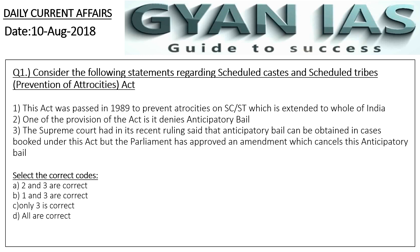Question 1: Consider the following statements regarding the Scheduled Castes and Scheduled Tribes Prevention of Atrocities Act. Statement 1: This act was passed in 1989 to prevent atrocities on SC/ST, and is extended to the whole of India. Statement 2: One of the provisions of the act is that it denies anticipatory bail. Statement 3: The Supreme Court in its recent ruling said that anticipatory bail can be obtained in cases booked under this act, but Parliament has approved an amendment which cancels this anticipatory bail.